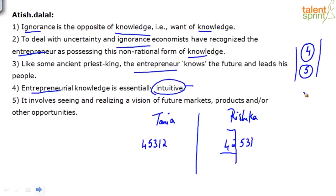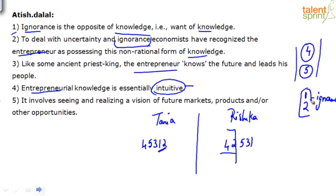Let's look at the next connects. Two follows one — very good, that connect is solid. Why? 'To deal with uncertainty and ignorance' — ignorance is introduced in sentence one: 'Ignorance is the opposite of knowledge, that is, want of knowledge.' So two has to follow one because 'ignorance' is the keyword connecting those two sentences.